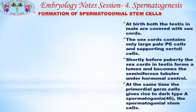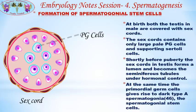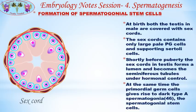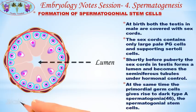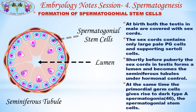First, let's see the formation of spermatogonial stem cells. At birth, both testes in the male are covered with sex cords. The sex cords contain only large pale primordial germ cells and supporting Sertoli cells. Shortly before puberty, the sex cords in the testis form a lumen and become the seminiferous tubules under hormonal control. At the same time, the primordial germ cells give rise to dark type A spermatogonia — the spermatogonial stem cells.